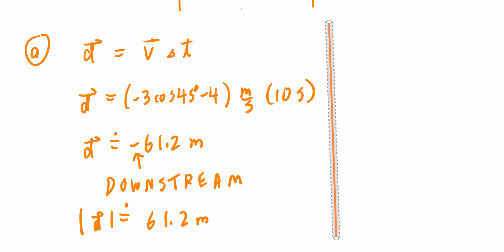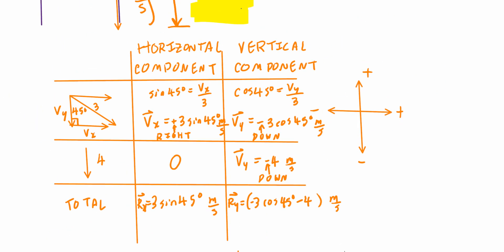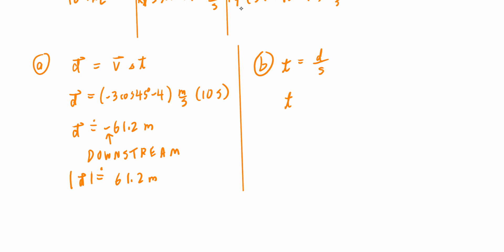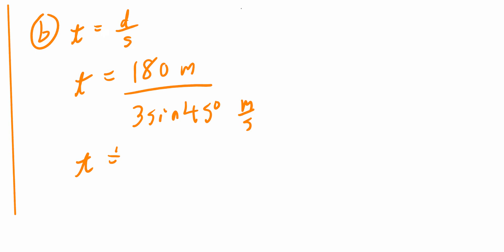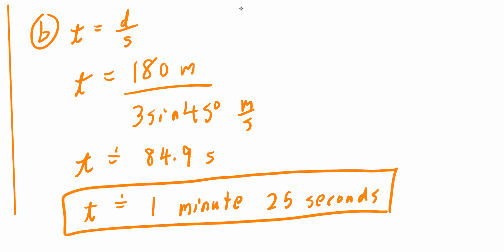For Part B, time equals distance divided by speed. The river is 180 meters wide, and the horizontal speed is 3 sine 45 degrees m/s. So time equals 180 divided by 3 sine 45 degrees, which is approximately 84.9 seconds. Converting to minutes and seconds — since one minute equals 60 seconds — that's approximately 1 minute and 25 seconds. I hope this makes sense.